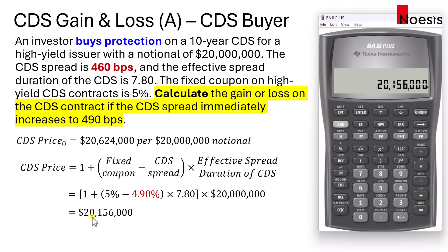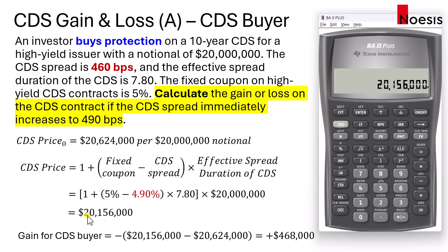When the CDS price drops, it is a gain for the short position and a loss for the long position. The party that buys the CDS — the party that buys protection — is taking the short position on the reference entity. So this is a gain for the investor. To calculate the gain, we take the new price of $20,156,000 minus the initial price, and because it's a short position, we insert a negative sign at the front. The difference is negative, so a negative multiplied by a negative becomes a positive, giving the CDS buyer a mark-to-market gain of $468,000.